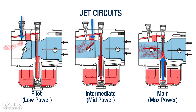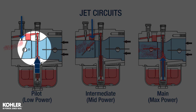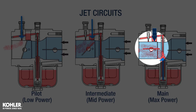Before we leave this graphic, I'd like to point out an error. All jet circuits will provide fuel at all throttle plate positions, meaning the intermediate and main jets will provide fuel when the throttle plate is at or near closed, and the pilot and intermediate jets will still provide fuel when the throttle plate is wide open.